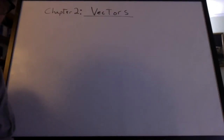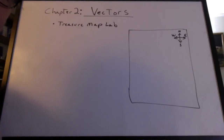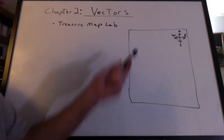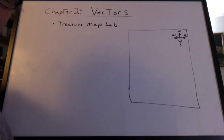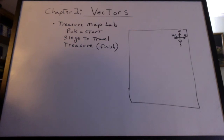Chapter two: the vectors. We started with the treasure map lab. Many of you did this in your room and we had to decide which was going to be the north, south, east, and west walls. You had to pick a start, three legs to travel, and a place where you're going to bury your treasure — the finish.